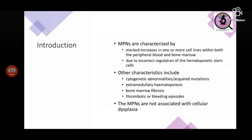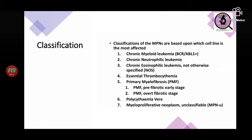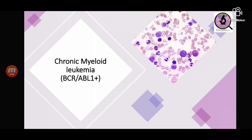Myeloproliferative neoplasms are classified on the basis of which cell line is most affected. In chronic myeloid leukemia, the granulocytic cell line is most affected — with mature neutrophils seen in neutrophilic leukemia and eosinophils in eosinophilic leukemia. In essential thrombocythemia, platelets are most increased. Primary myelofibrosis involves fibrosis of the marrow. We will start with chronic myeloid leukemia with BCR-ABL translocation.